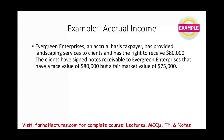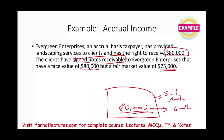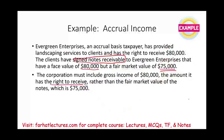Another example: Evergreen Enterprises, an accrual taxpayer, provided landscaping services and has the right to receive $80,000. The client signs a notes receivable with a face value of $80,000, but a current fair market value of $75,000. Evergreen must include $80,000 in gross income — the amount it has the right to receive — rather than the fair market value of $75,000. For notes receivable under the accrual method, what matters is the right to receive, not the fair value.